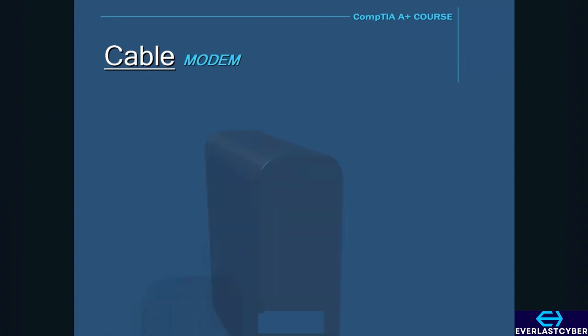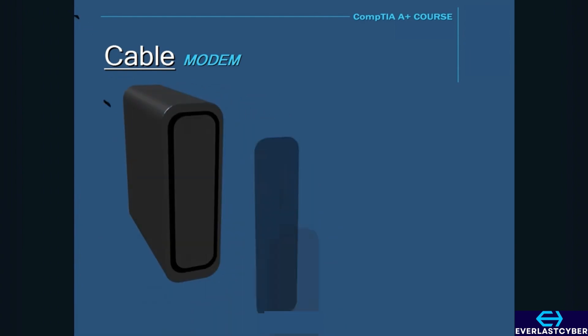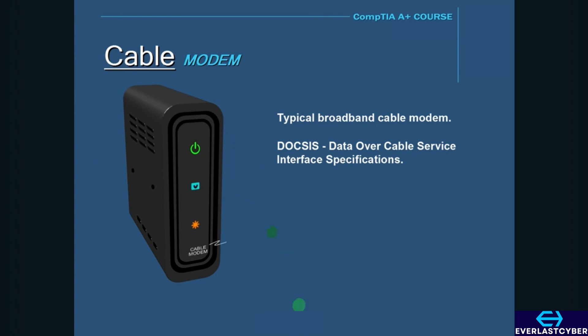Those of you who have broadband cable internet will recognize this device. This is your typical DOCSIS cable modem. DOCSIS stands for Data Over Cable Service Interface Specifications. The DOCSIS 3.1 specification supports speeds of 10 gigabit downstream and 1 gigabit upstream.